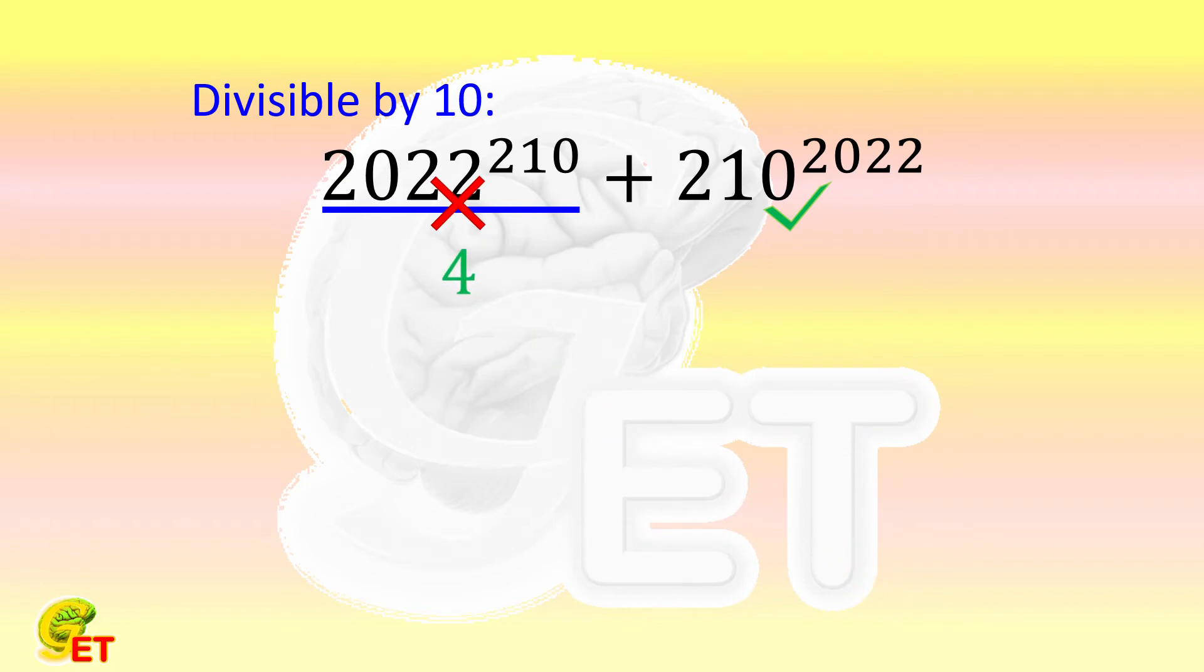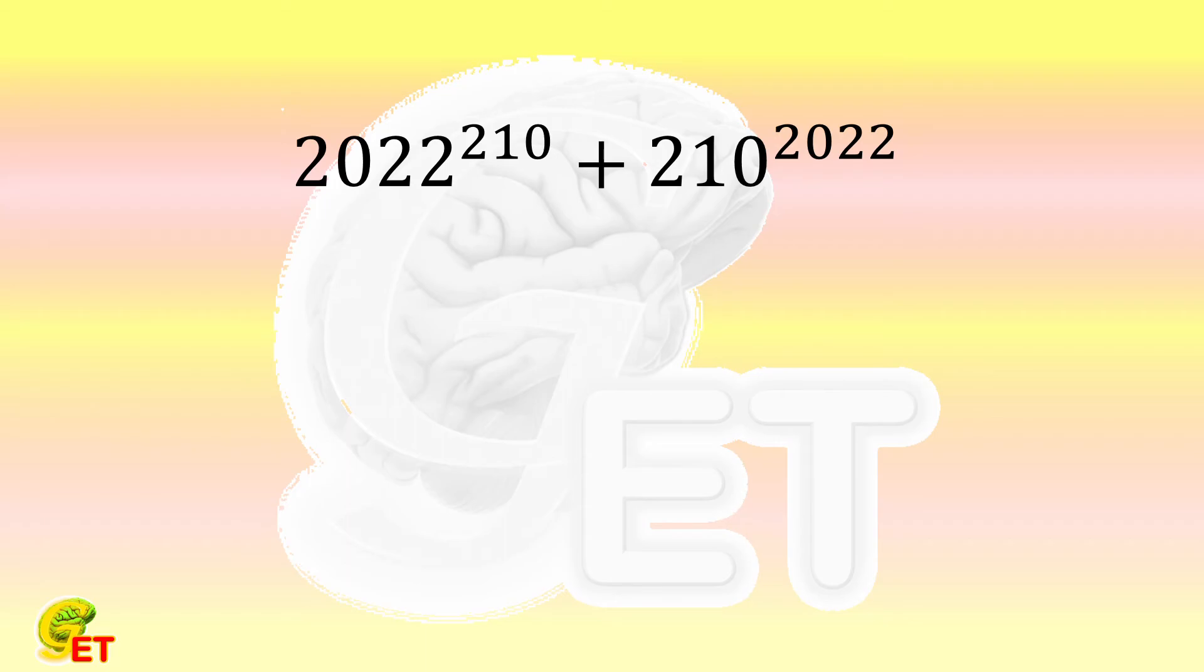Then is this big number divisible by 10? No. Dividing this number by 10, we get the remainder 4. To sum them up, this big number is divisible by 9, whereas the remainder of it divided by 10 is 4. So what is the remainder of it divided by 90?